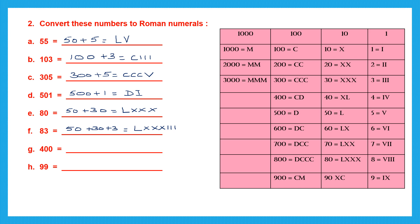Next, 400 — looking at the table, 400 is CD, which is 500 minus 100. C comes to the left so it is subtraction: 500 minus 100 equals 400. Then 99 is 90 plus 9. For 90 we write XC (100 minus 10), and for 9 we write IX (10 minus 1), so 99 is XCIX.